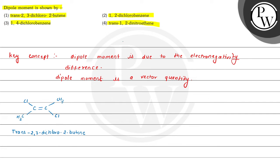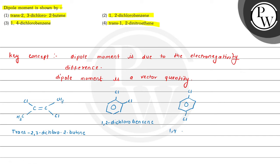The next is 1,2-dichlorobenzene. Here we draw the benzene ring with chlorine substituents at the 1 and 2 positions — that is, adjacent positions on the ring.